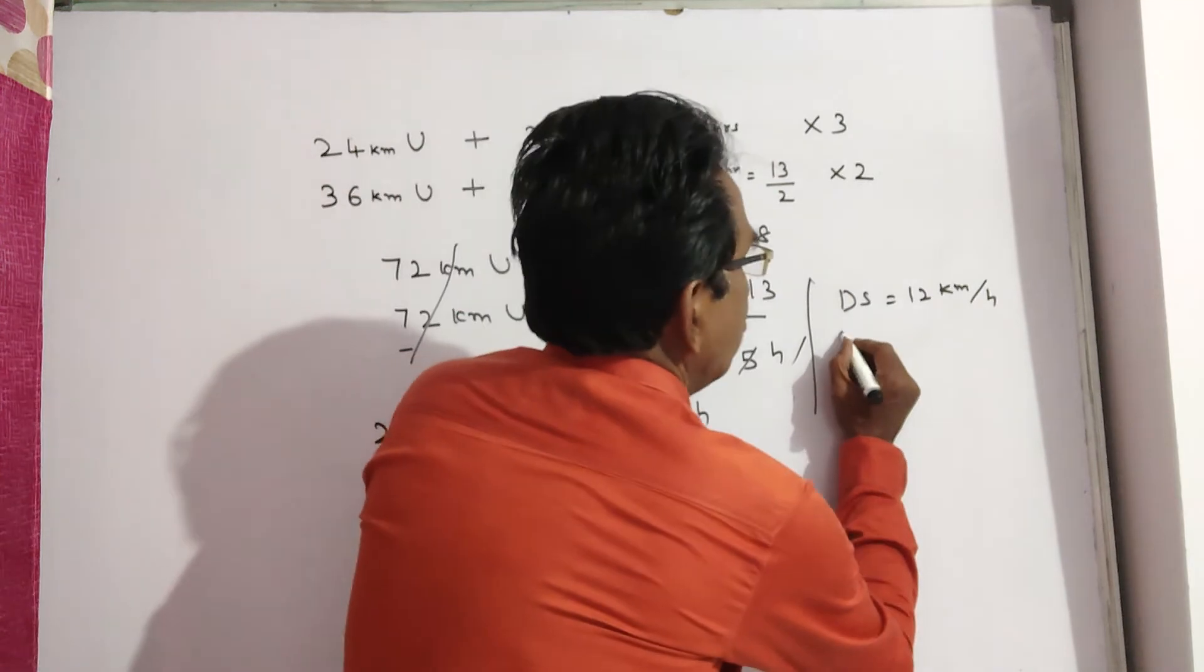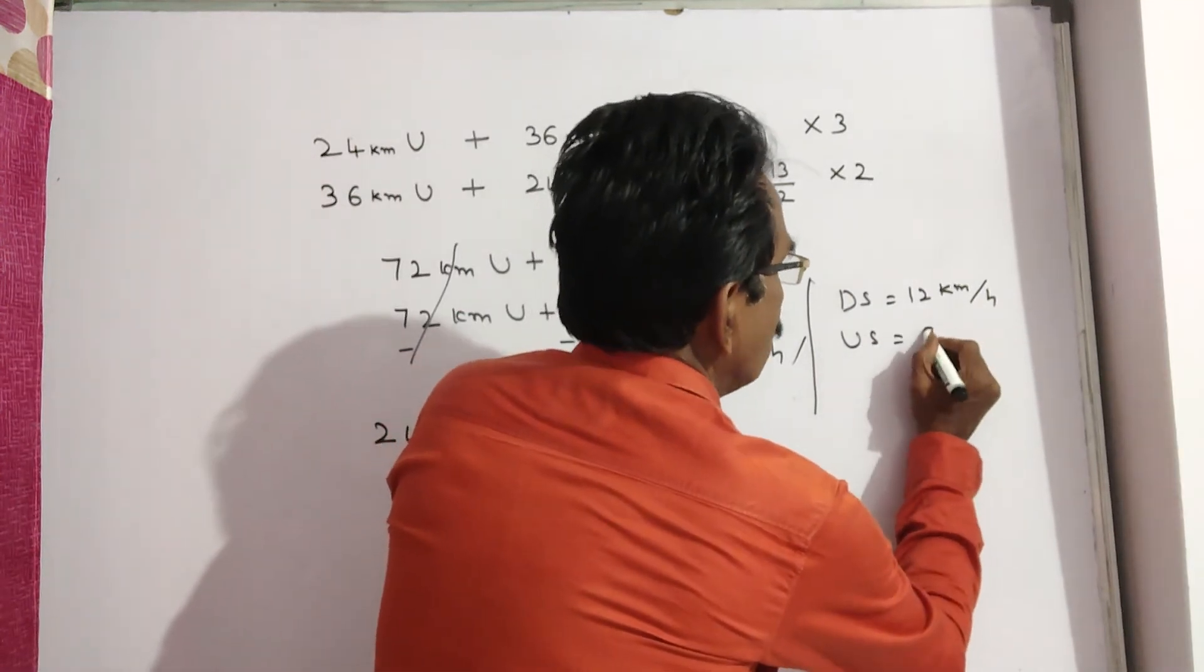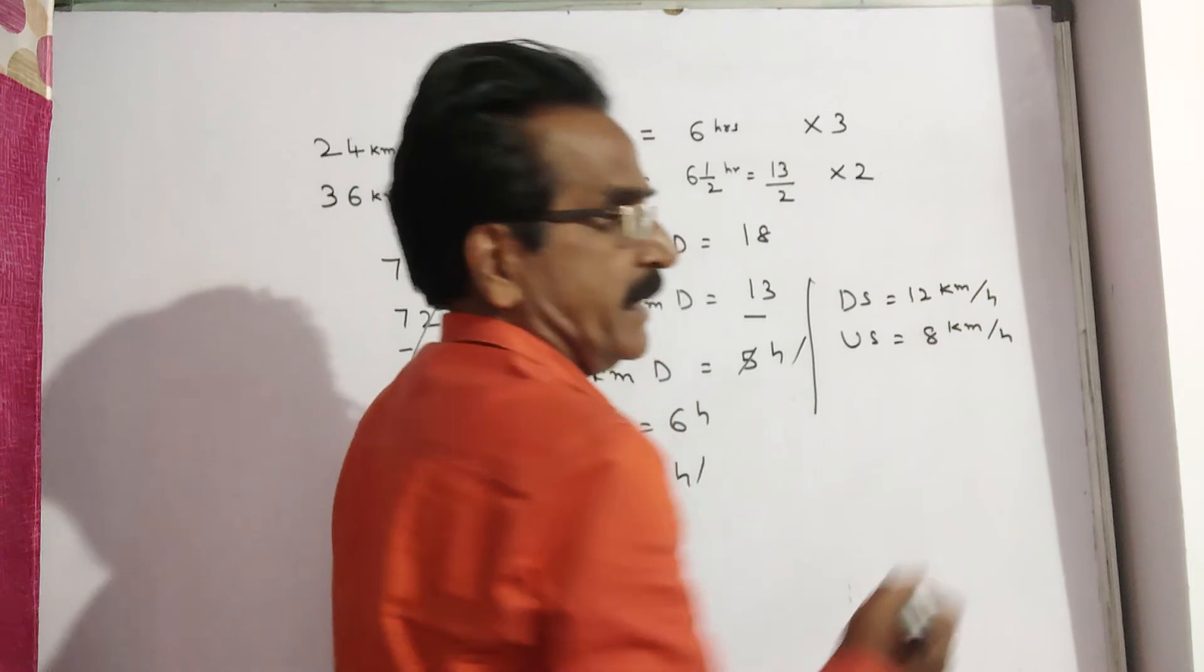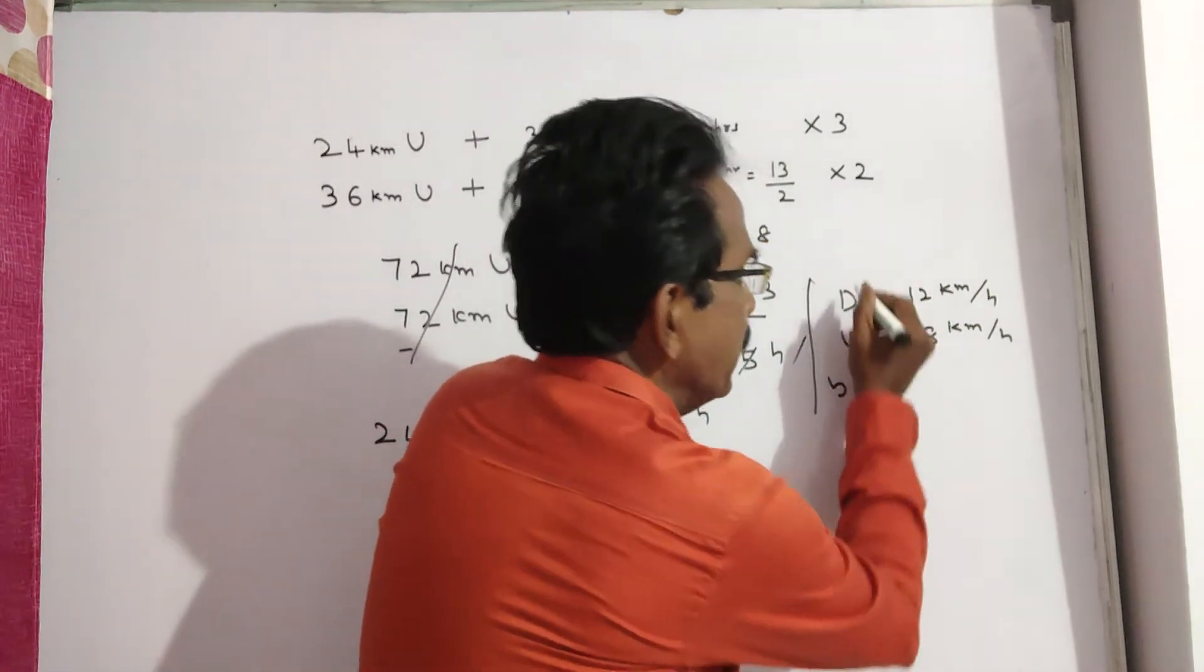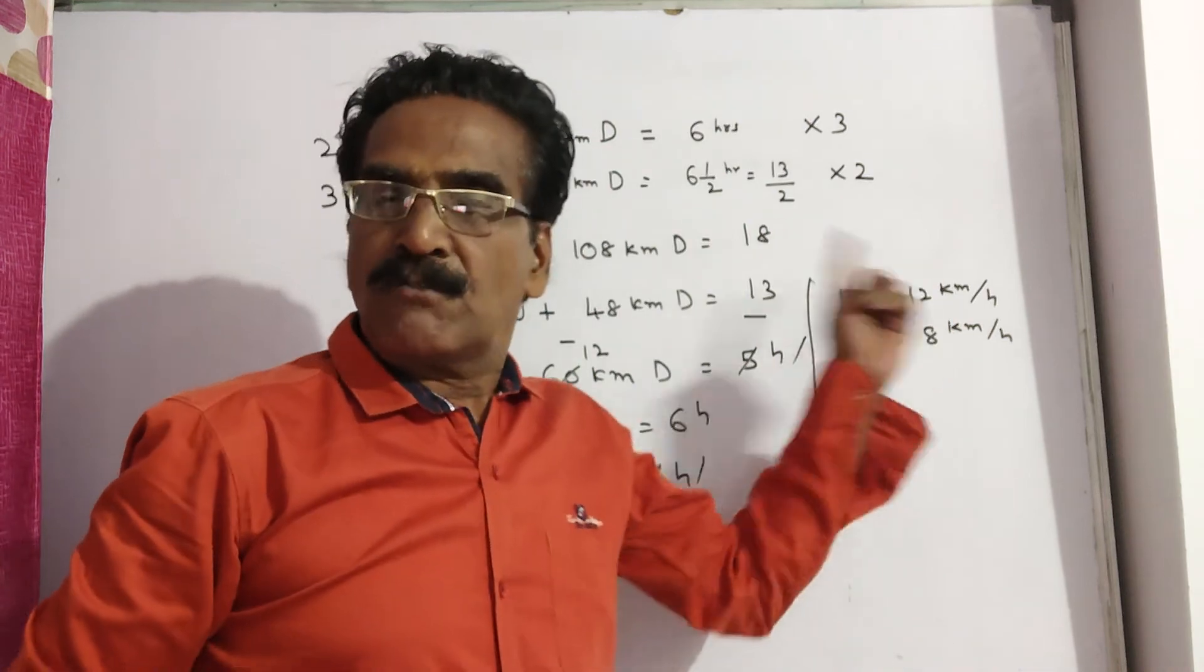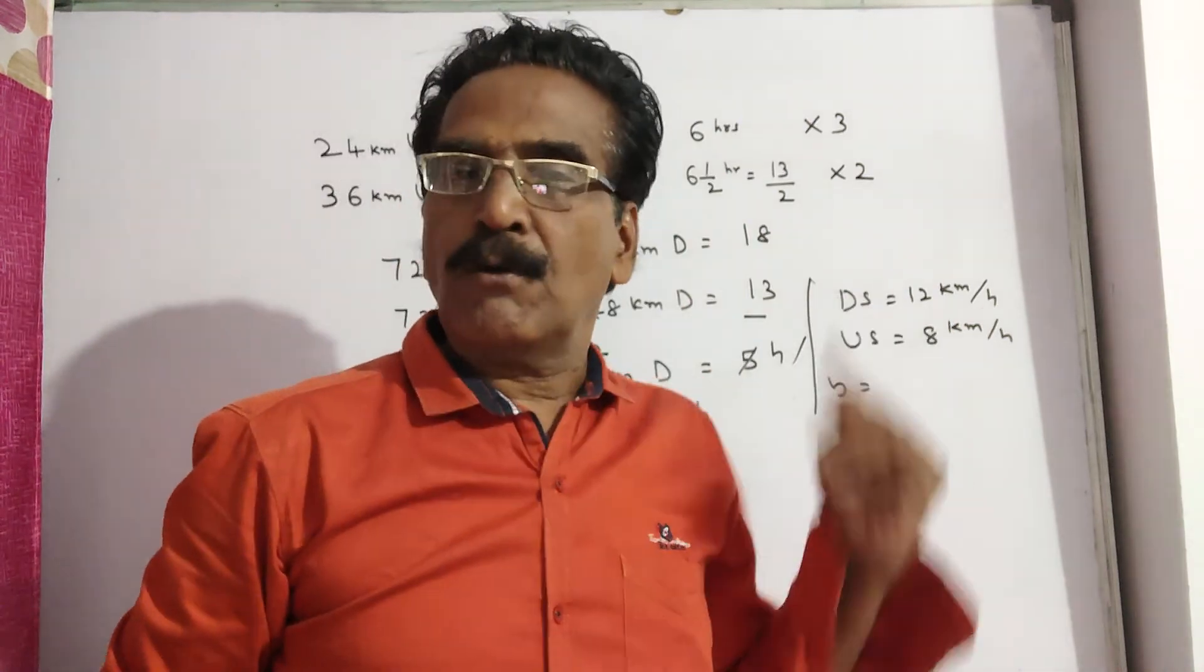That means upstream velocity is equal to 8 kmph. Now we want the stream velocity. Stream velocity is equal to downstream minus upstream by 2, 12 minus 8 by 2, 4 by 2.